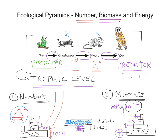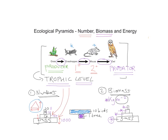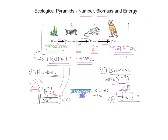Now we've come to the final of the three ecological pyramids: the Pyramid of Energy. The Pyramid of Energy is by far the most accurate and efficient way of showing what's really going on within this ecosystem or food chain, because it truly reflects how efficient a particular food transfer is.